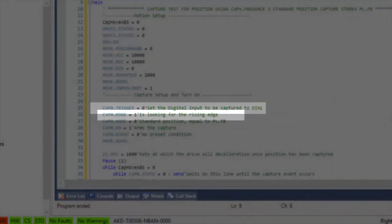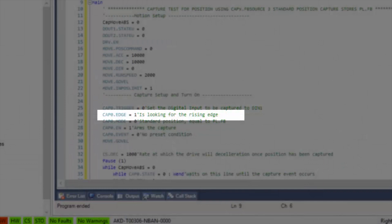Cap0.Edge equals 1 will trigger on the rising edge or positive transition. Cap0.Mode equals 0 will capture the standard position in the drive units.